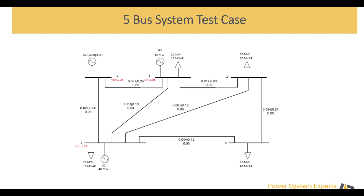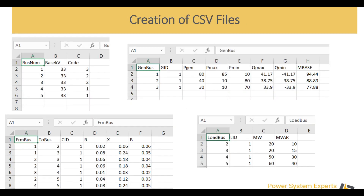Here you can see that we have four kinds of data. One way to model these things using Python is to create a CSV file for each different kind of equipment with the data you want. We have created four CSV files: one for the bus, one for the generator, one for branch, and one for the load.